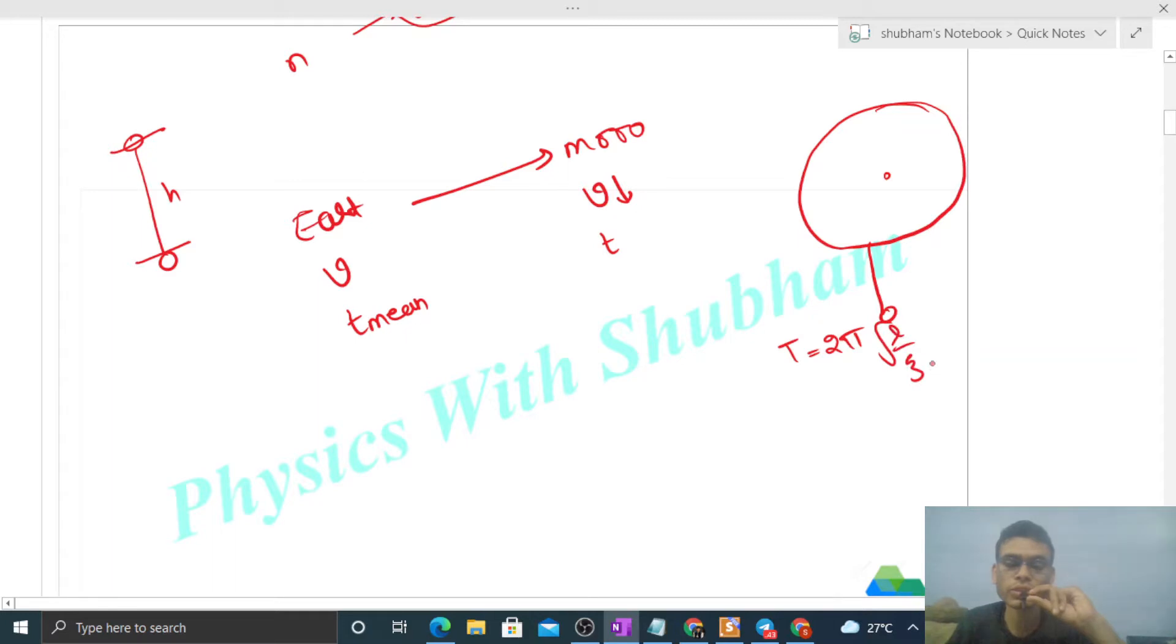Because iska time period increase ho jayega, 2π under root of l by g hai, right. So g ka value agar decrease ho ga then time period increase ho jayega. Time period increase hone ka matlab hai ki yeh jo pendulum hai dhire dhire oscillate karega. It means yeh jo clock hai us mein time dhire dhire hoga. So speed bhi dhire dhire ja rahe, means yeh jo object hai iska speed bhi dhire ho gaya aur time jo hum measure kar rahe hai woh jo clock hai woh uska time bhi dhire ho gaya. So that's why time humein same dikha raha hai clock.